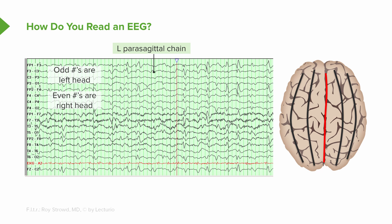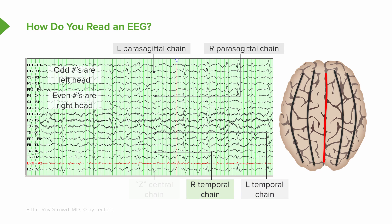The first left lines are the parasagittal chain — right along the midline on the left side. The next few lines are the right parasagittal chain, adjacent to the central sulcus. Below that, the next four lines are the left temporal chain, looking at the temporal cortices of the left side of the brain, then the right temporal chain. At the very bottom is the Z-band or Z-line. We're looking at the brain from front to back — frontal, parietal, occipital, and temporal areas.